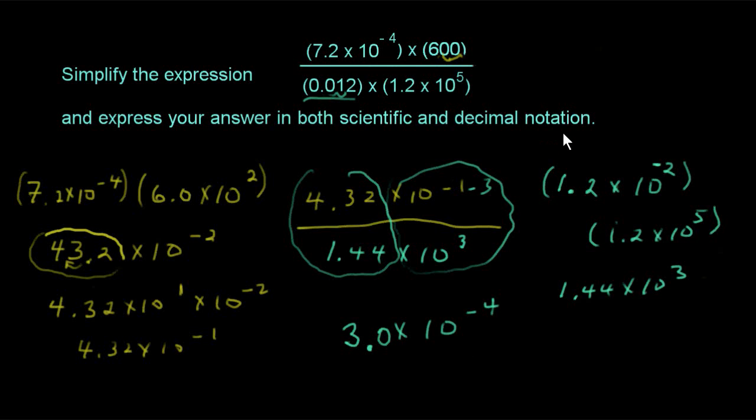They also want the answer written in decimal notation. The negative 4 indicates that, in my mind, it's a small number. It's going to be a number less than 1. So that means, in order to put it in decimal notation, I'm going to move it four places. I know that. To make it what I would consider a small number, I have to move this decimal point over four places to the left.